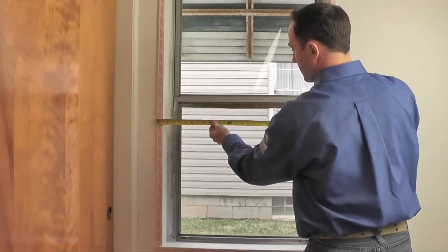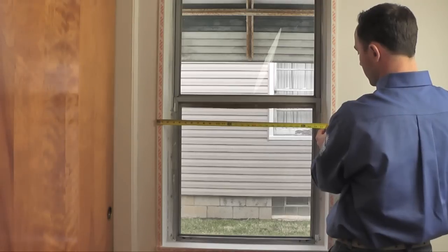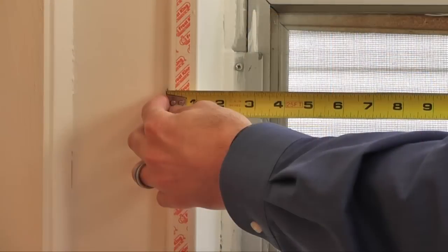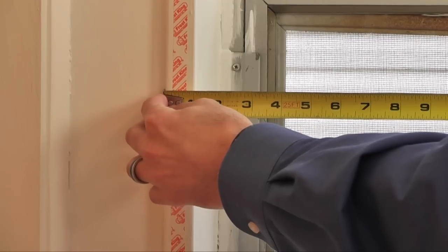Using your tape measure, measure the height and width of your window using the tape you just placed as a guide. Measure from the outside edge of the tape, then add one to two inches on each side.